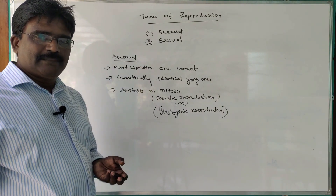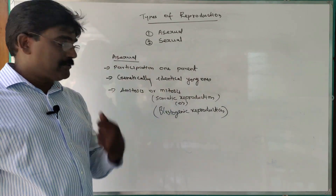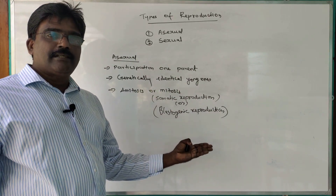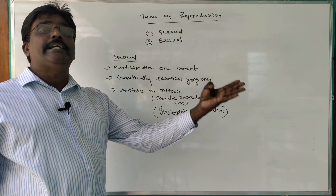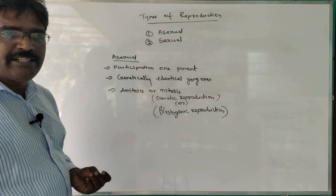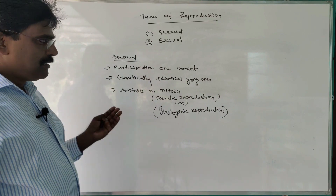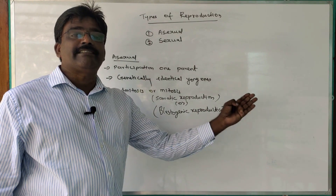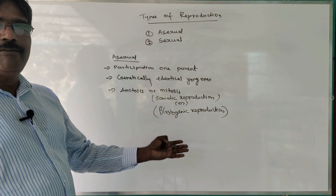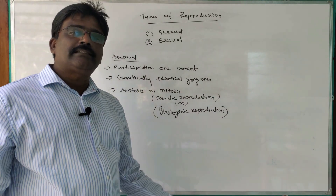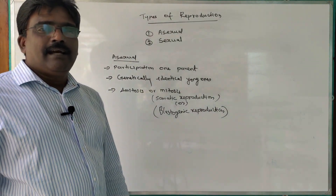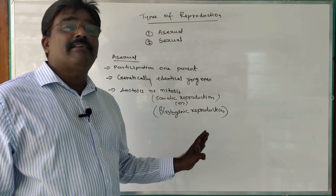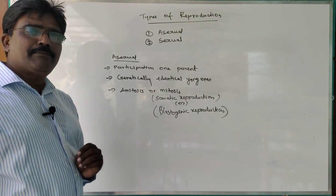Here we can get an assertion-reason type question: Assertion — asexual reproduction is also known as blastogenic reproduction. Reason — the reproduction takes place by mitotic or amitotic cell division. The answer: both assertion and reason are true, and the reason is the correct explanation for the assertion. Likewise, this type of question can be asked.